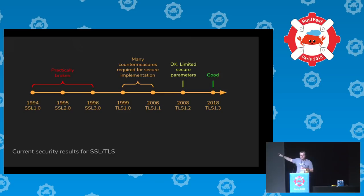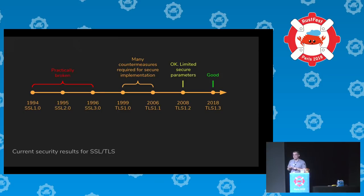There are countermeasures — implementation strategies for dealing with design faults — that came in around 1996 and haven't been removed until TLS 1.3. The problem is: the aims of these countermeasures aren't documented anywhere. The IETF hasn't published implementation guidance, so they're under-tested, difficult to reason about, and unconvincing.